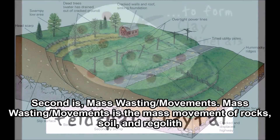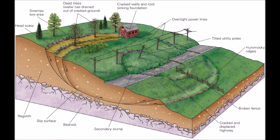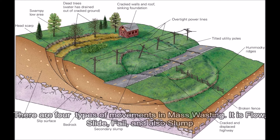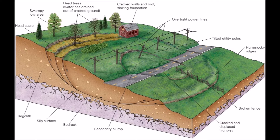The second exogenic process is mass wasting or movement. Mass wasting is the mass movement of rock, soil, and regolith. There are four types of movements in mass wasting: flow, slide, fall, and slump.